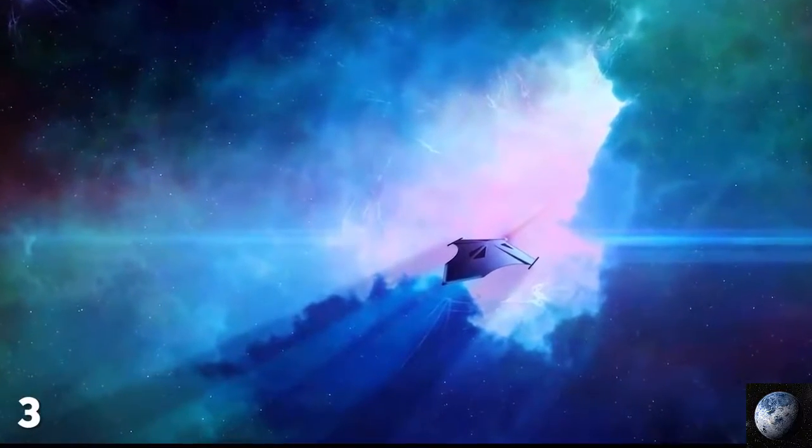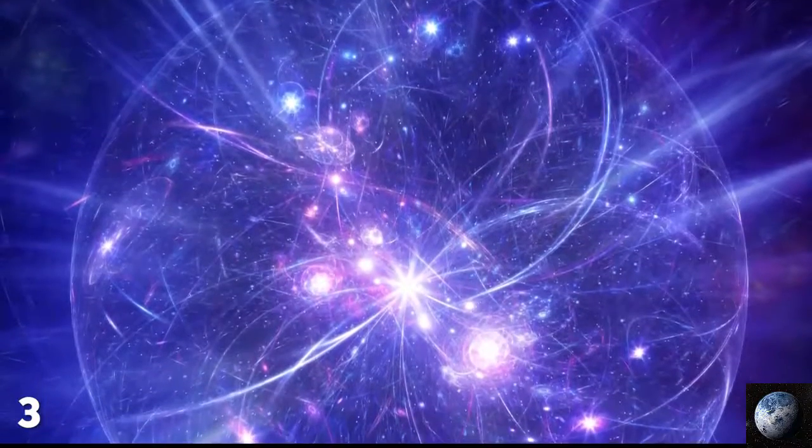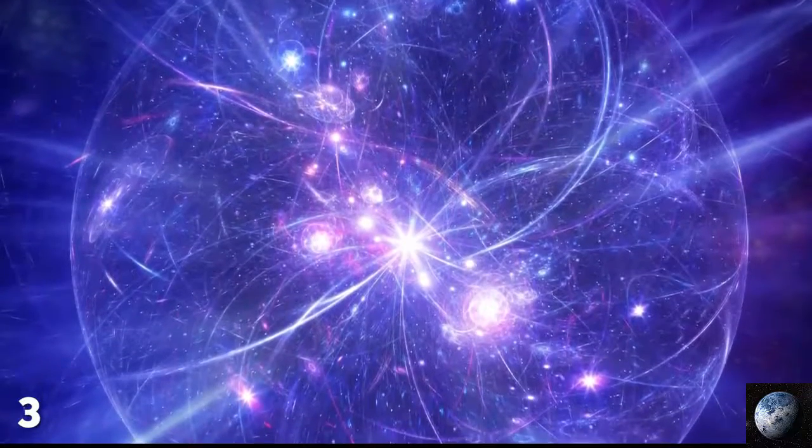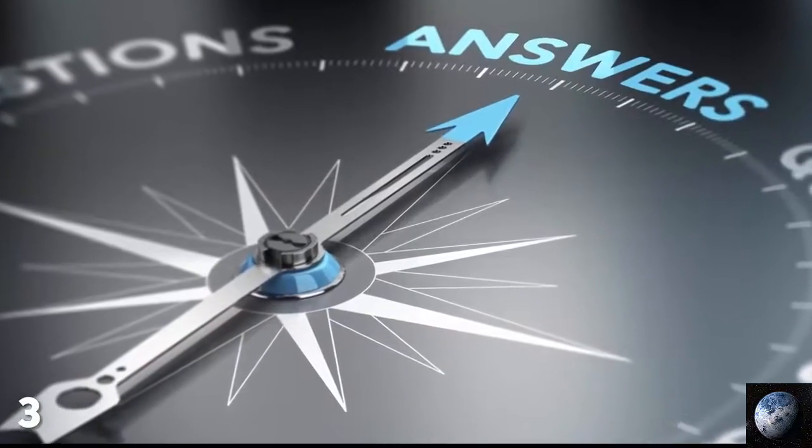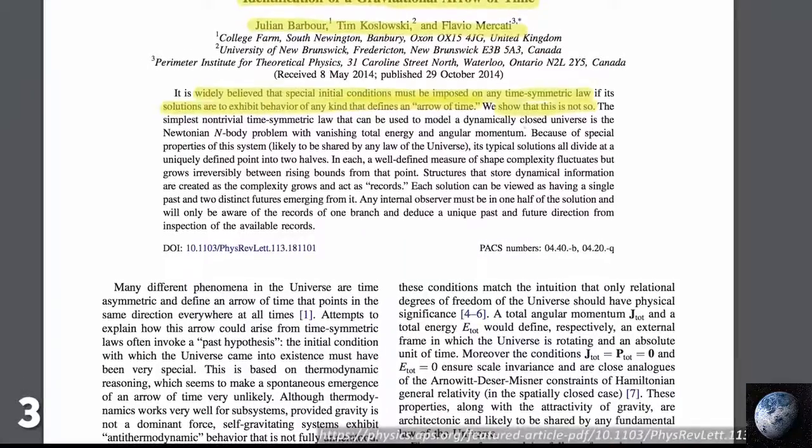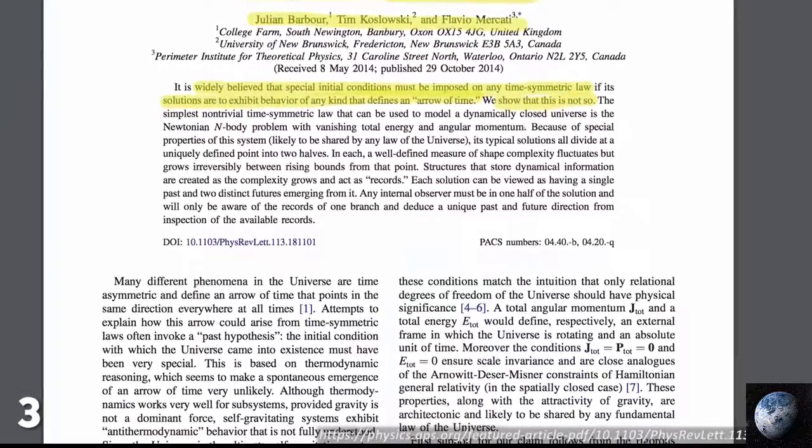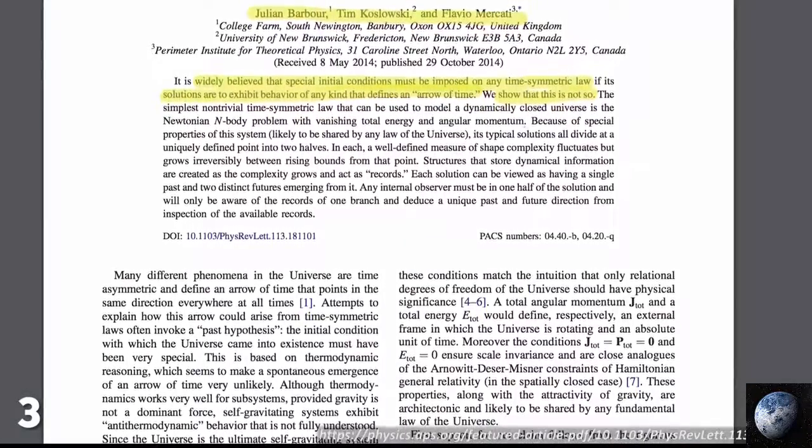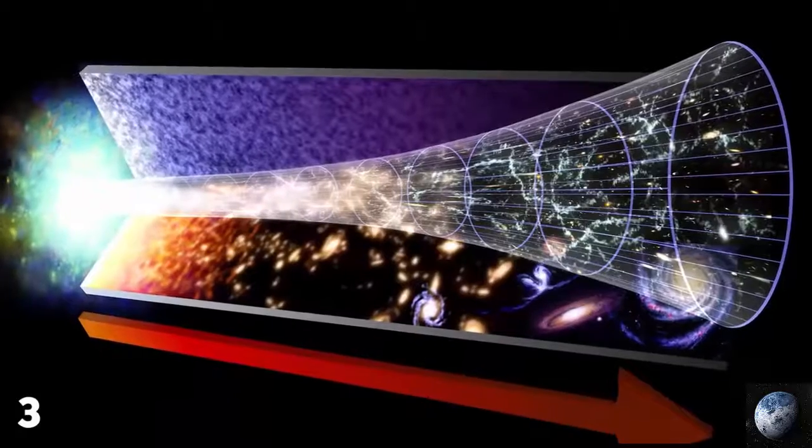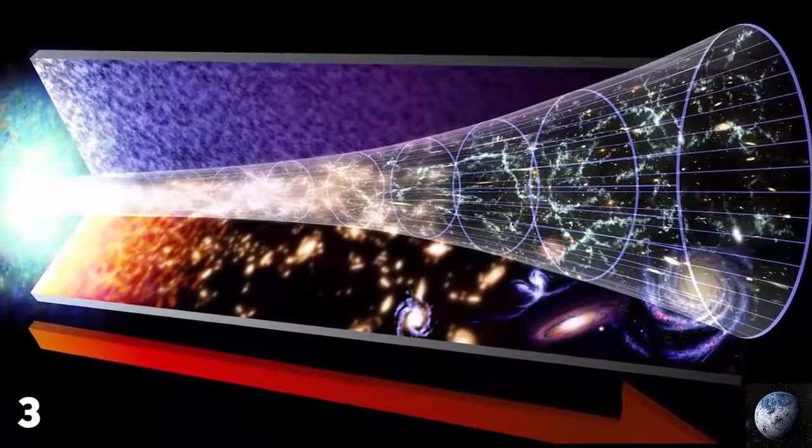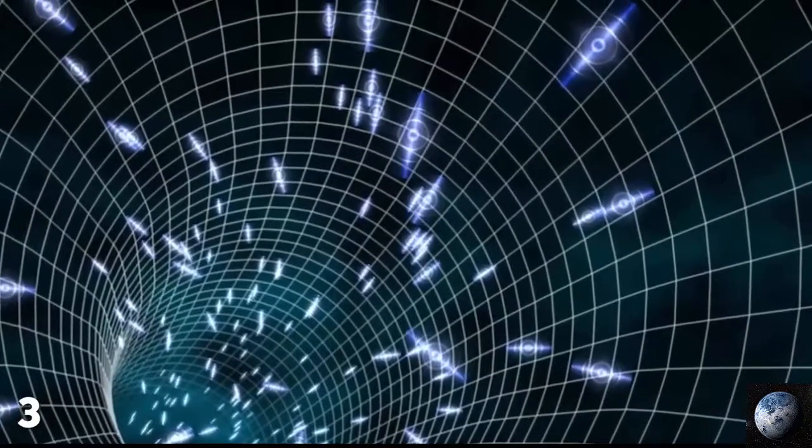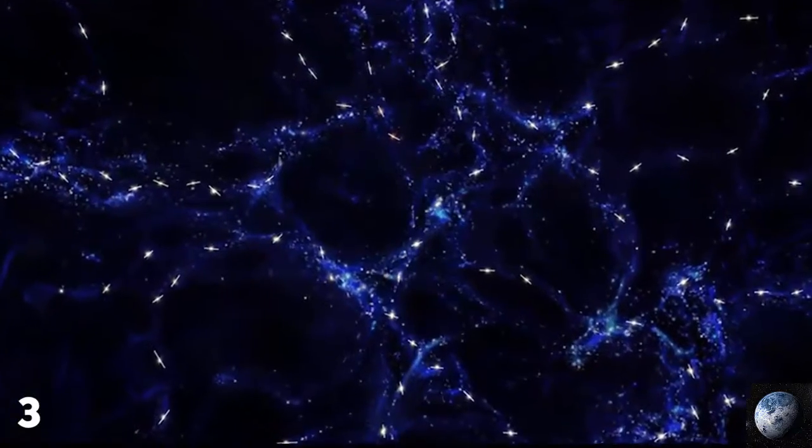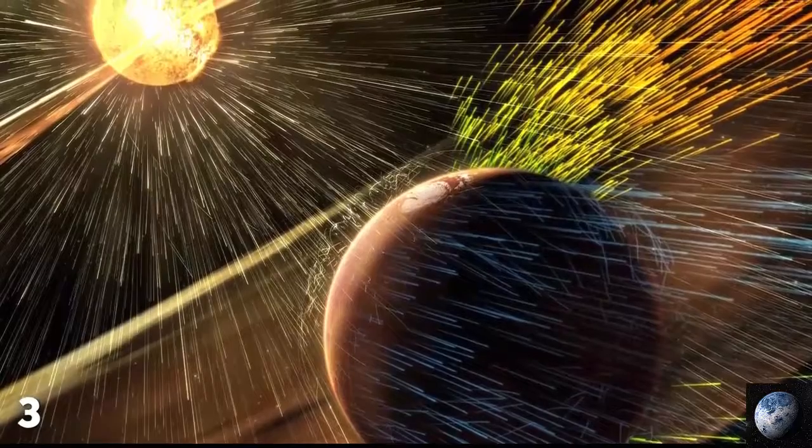One recently developed idea seeks to take us back to the beginning of the universe itself to find an answer. The theory proposed by Dr. Julian Barbour, Dr. Tim Kozlowski, and Dr. Flavio Mercati claims that when the Big Bang created our universe, we were not an only child. Our universe has a twin, and a rather bizarre one at that.